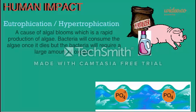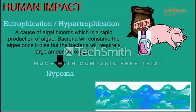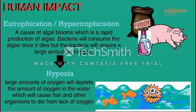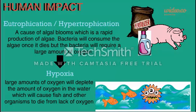Eutrophication will cause algal blooms, which is a rapid production of algae. When the algae die, bacteria will consume it, which requires large amounts of oxygen. This will create hypoxia. Hypoxia is when large amounts of oxygen will deplete the amount of oxygen in the water, which will cause fish and other organisms to die from lack of oxygen.